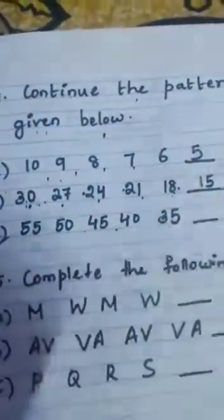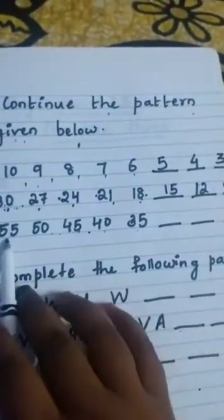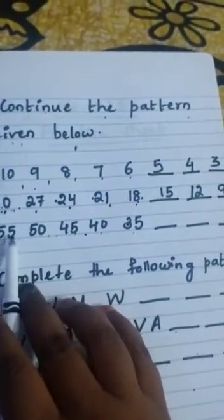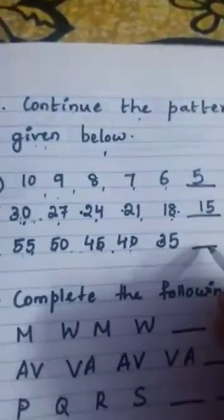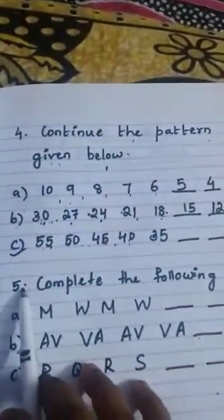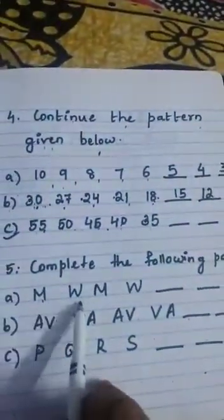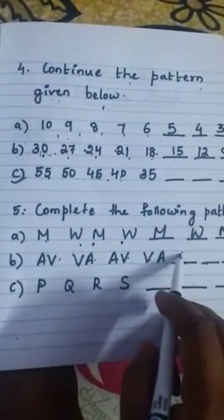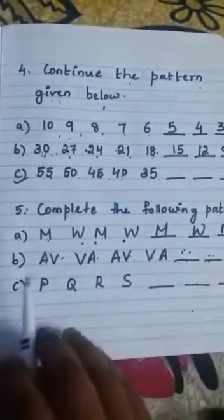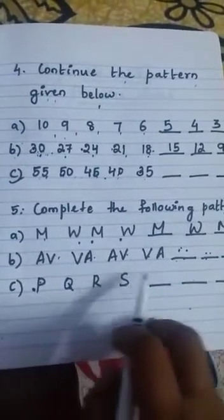Part C is homework: 55, 50, 45, 40 — a gap of 5 each time. 55 minus 5 is 50, 50 minus 5 is 45, 45 minus 5 is 40, then 35. Question 5: complete the following pattern — M, W, M, W, then M, then W, then M. Also A, V, V, A, A, V, V, A then V, A, V, V, A. For the alphabetical pattern P, Q, R, S — it comes T, U, V.